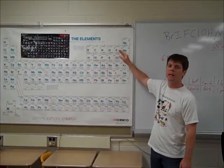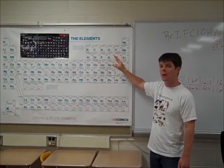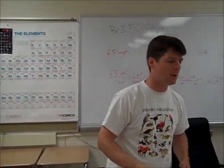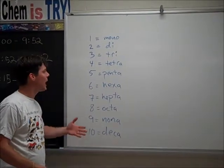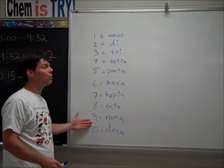That means that they're both going to be to the right and above the stair steps on the periodic table. Now let's look at some examples. To name binary molecular compounds you need to know the following prefixes.